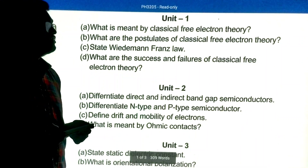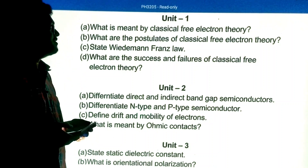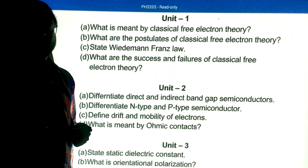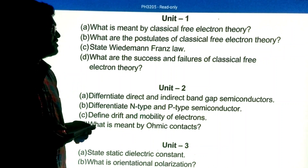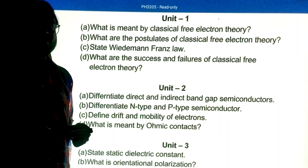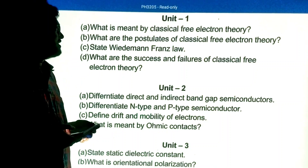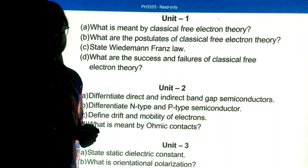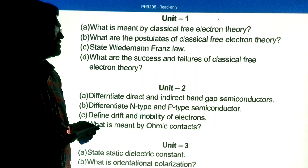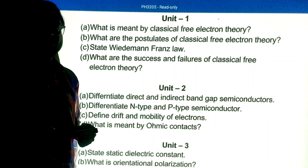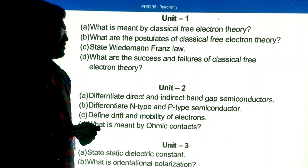Unit 1 Part A important questions: What is meant by classical free electron theory? What are the postulates of classical free electron theory? State the Wiedemann-Franz Law. What are the successes and failures of classical free electron theory?